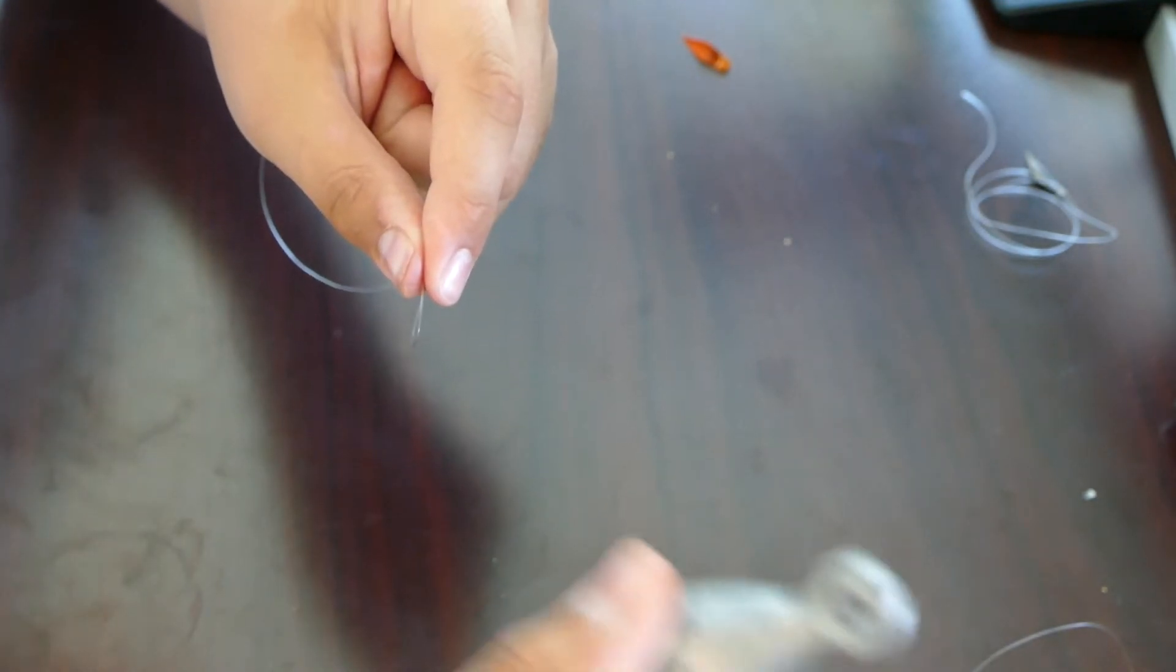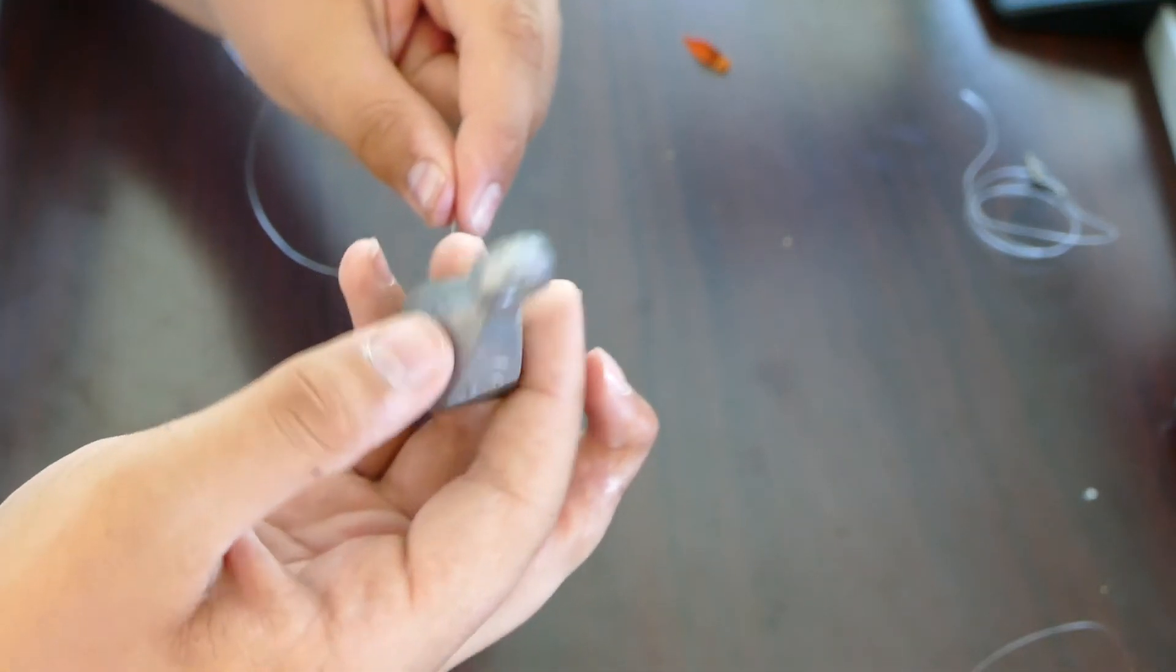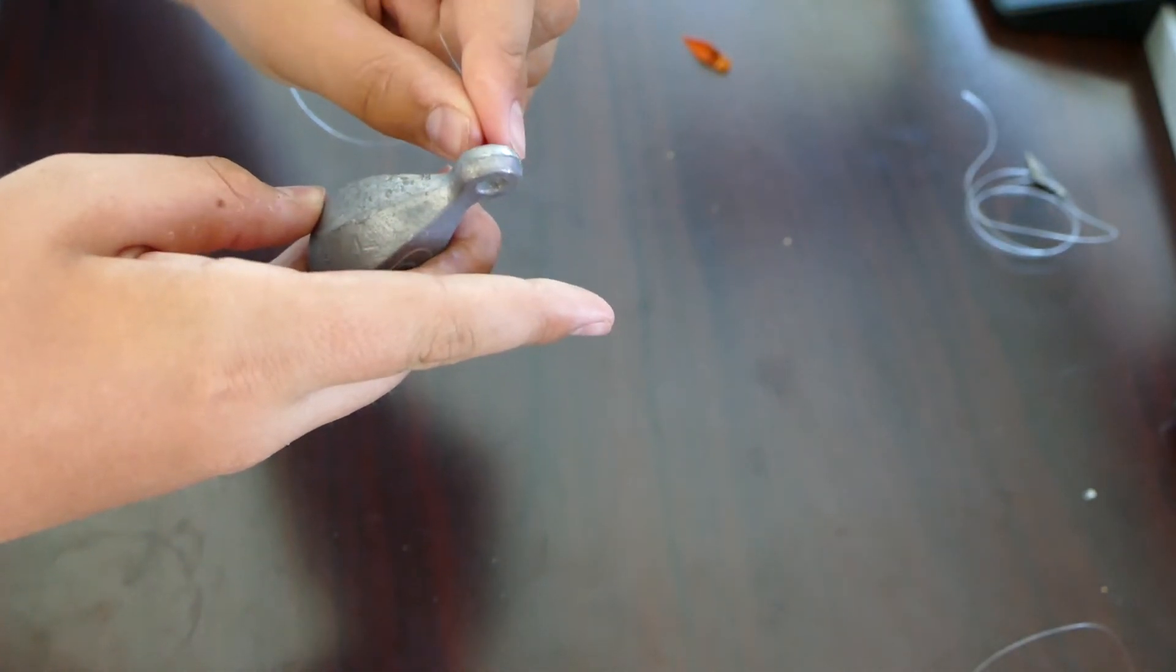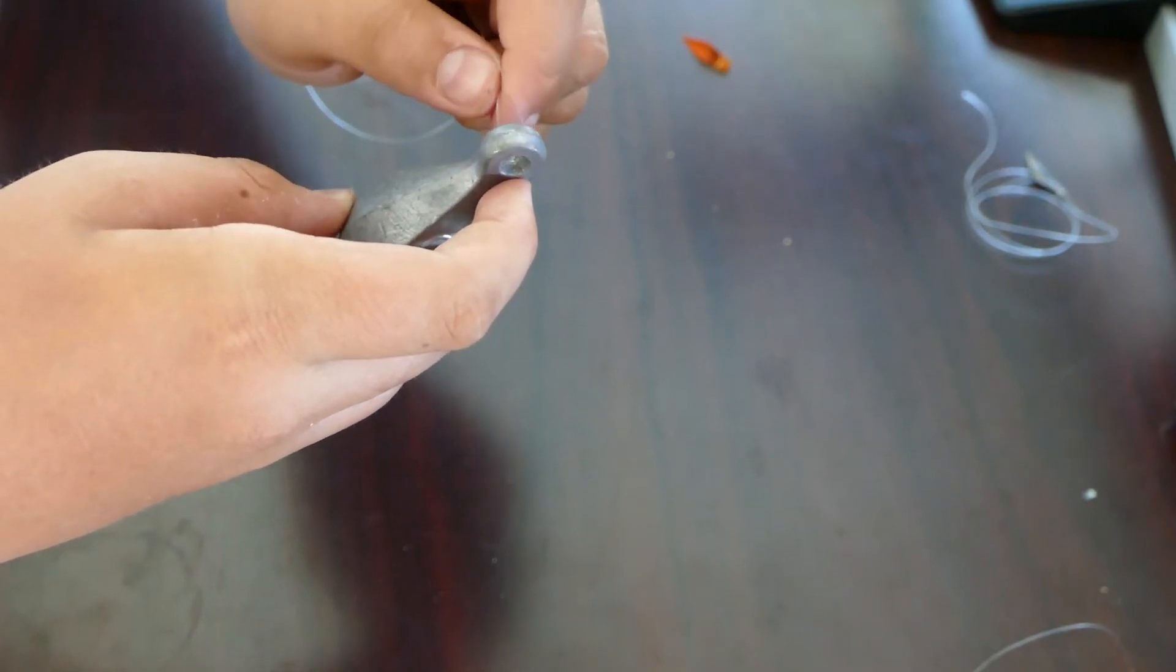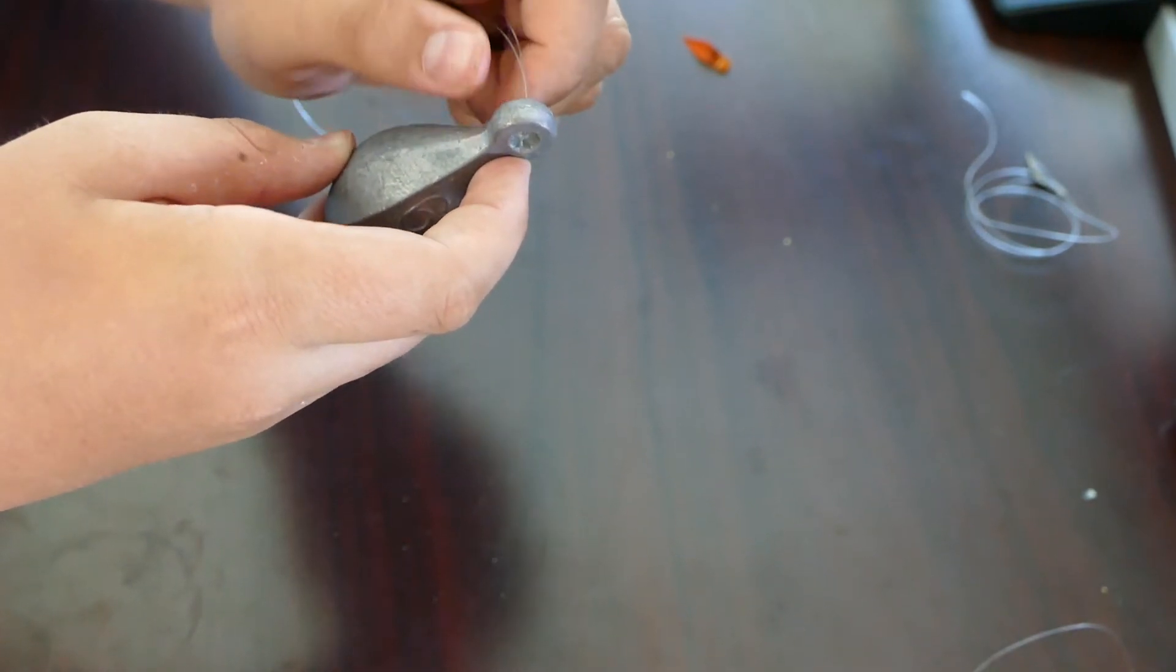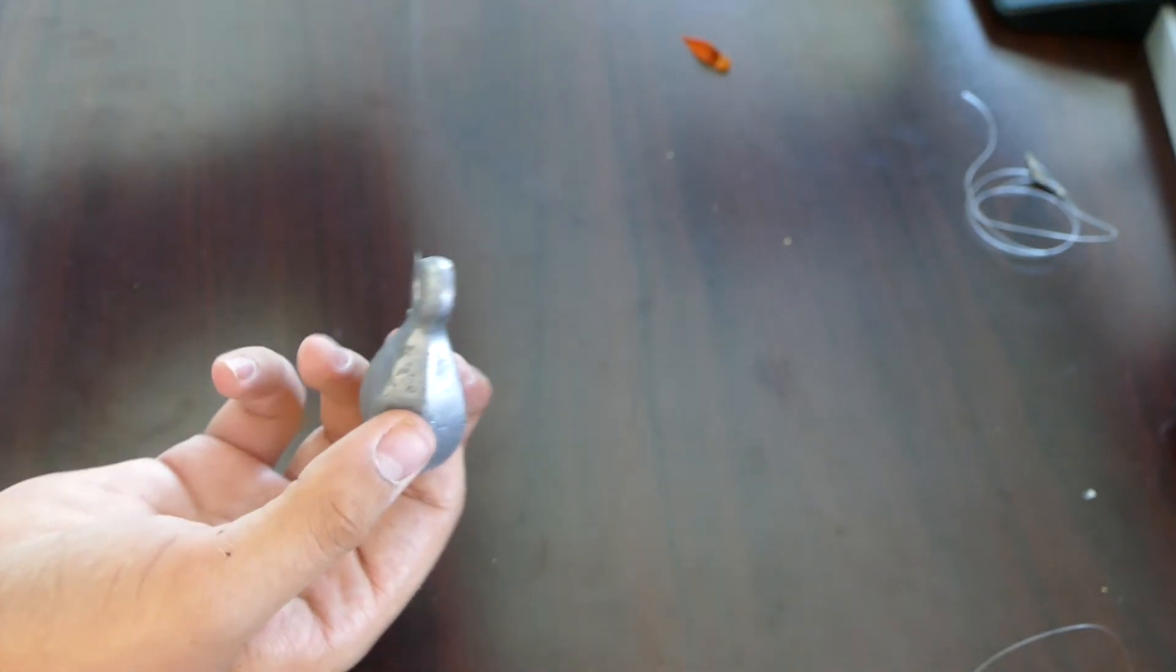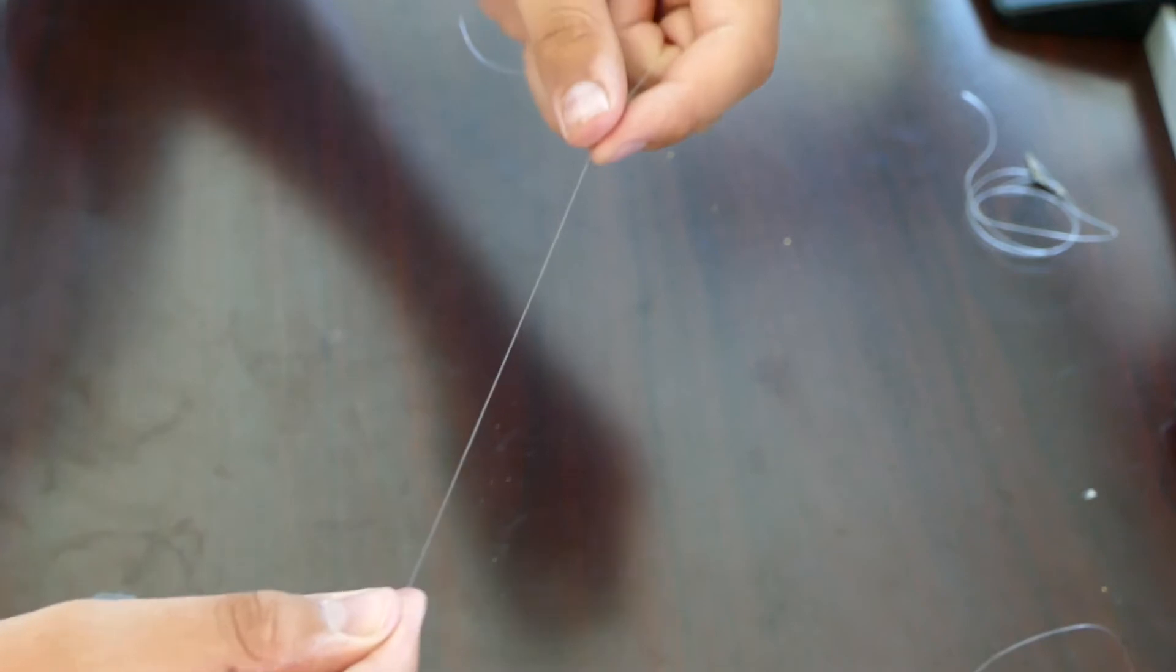Now just for the sake of example so you guys can see it, this is a 6-ounce weight. I would never use something like this because for small fish I'd probably just use 1 ounce, but just for the sake of an example, pull it through. Now it's nice and tight on there.